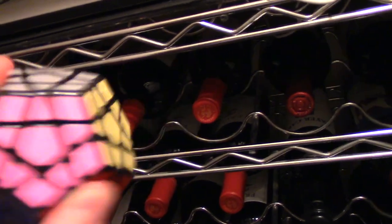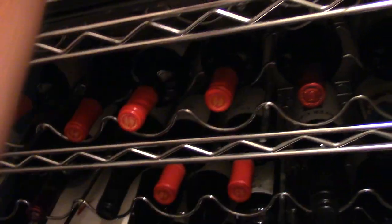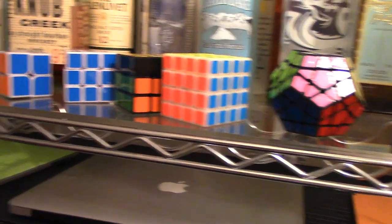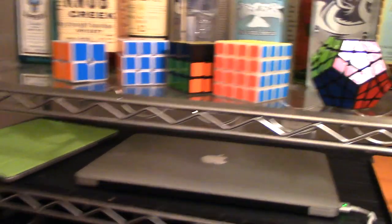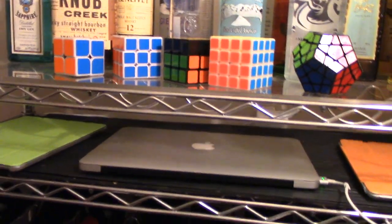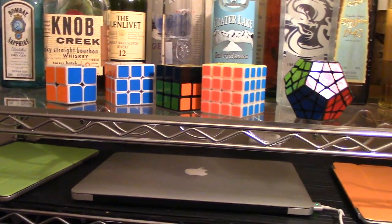And here is a Dian Megaminx without the ridges. I don't really solve Megaminx very much. My preferred one has ridges, but that one's in my office at work. So those are my cubes that are downstairs. These are the ones that I grab the most when I make videos.